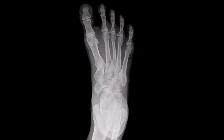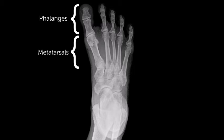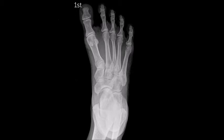We'll begin with an AP projection of the foot. We get good visualization of most of the bones of the foot here. However, those most proximal tarsals have some overlapping of the tibia and fibula. The digits are numbered first through fifth, starting with the great toe.